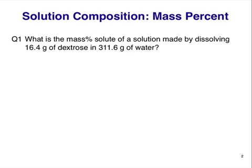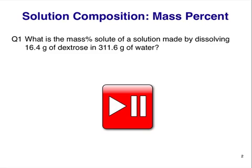Question one. What is the mass percent solute of a solution made by dissolving 16.4 grams of dextrose in 311.6 grams of water? Stop the video here and work out your answer.